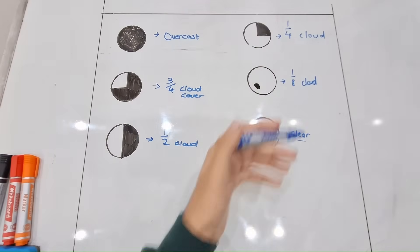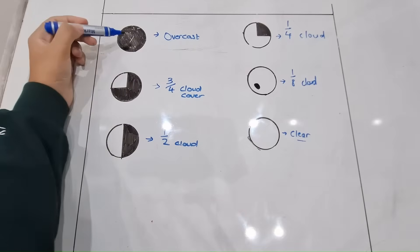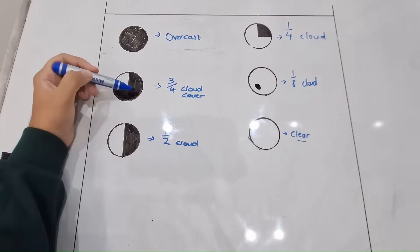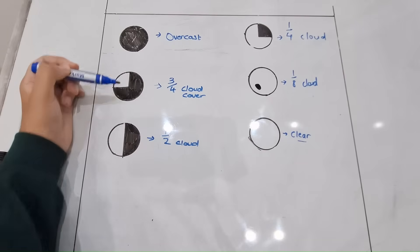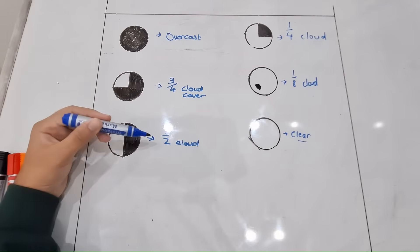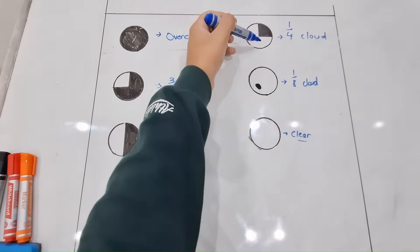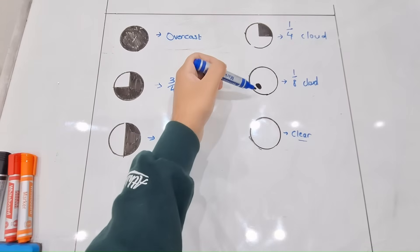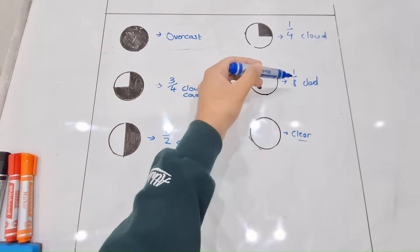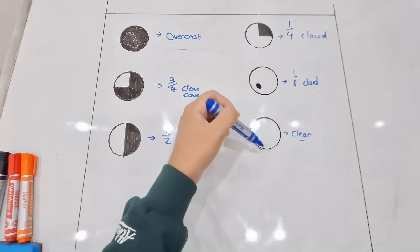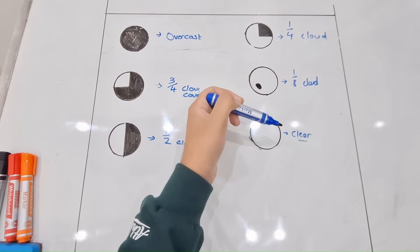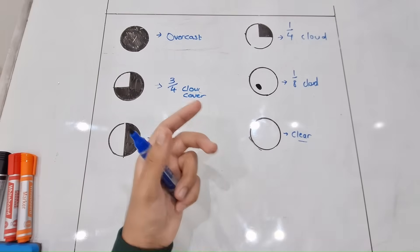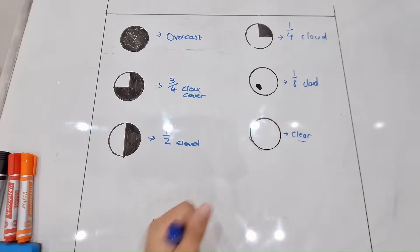Let's go over it one more time. A fully shaded circle is overcast. Three-quarter shaded is three-quarter cloud cover. Half shaded is one-over-two cloud coverage. One part shaded is quarter cloud coverage. A tiny dot shaded is one-eighth cloud cover. Completely empty is clear conditions. Let's do one more example so that we're fully covered and ready for any examiner question.